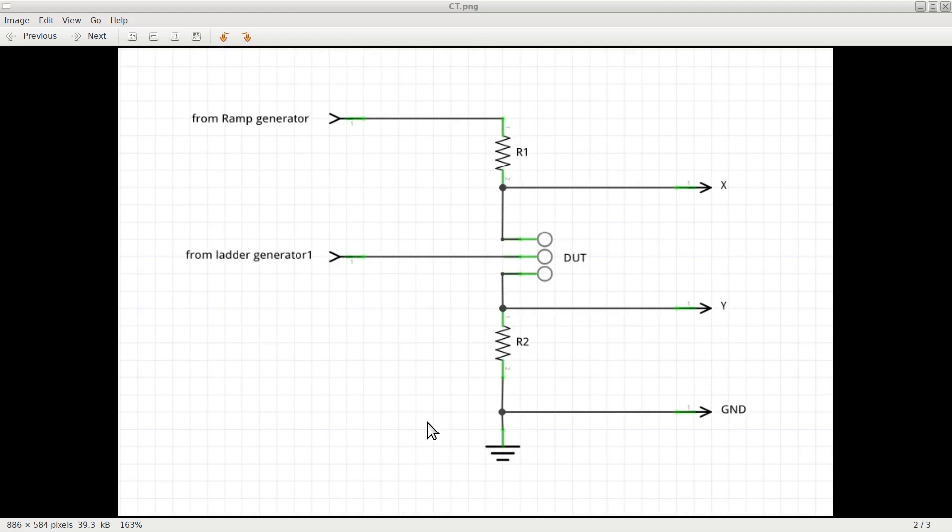Eventually, if the DUT has a control pin, like the base of a transistor, we will apply a ladder signal to such control pin, thus generating a whole family of curves for the device, one curve for each step of the ladder.